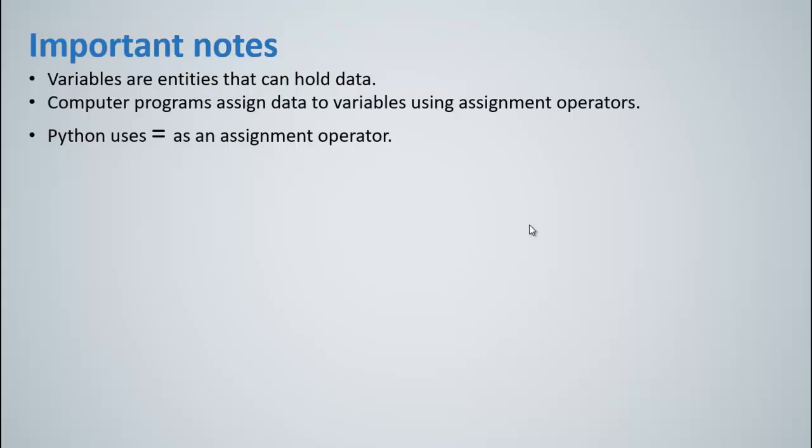It is important to know that in computer programming, variables are empty boxes or entities that can hold data, different types of data. So computer programs assign data to the variables that we want to announce. They use this through using assignment operators.